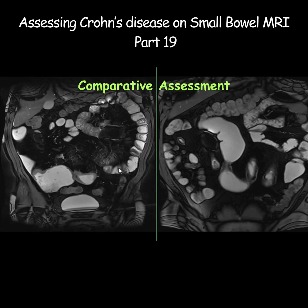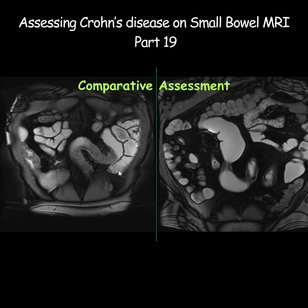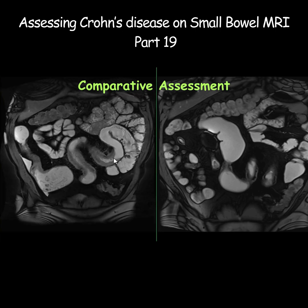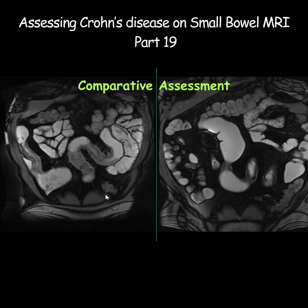All of these signs suggest superimposed active inflammation on a background of fibrous stenotic Crohn's. In these kind of studies, we would like to provide the comparison in wall thickening between the two studies and also compare each and every segment in terms of their length and the degree of active inflammation.